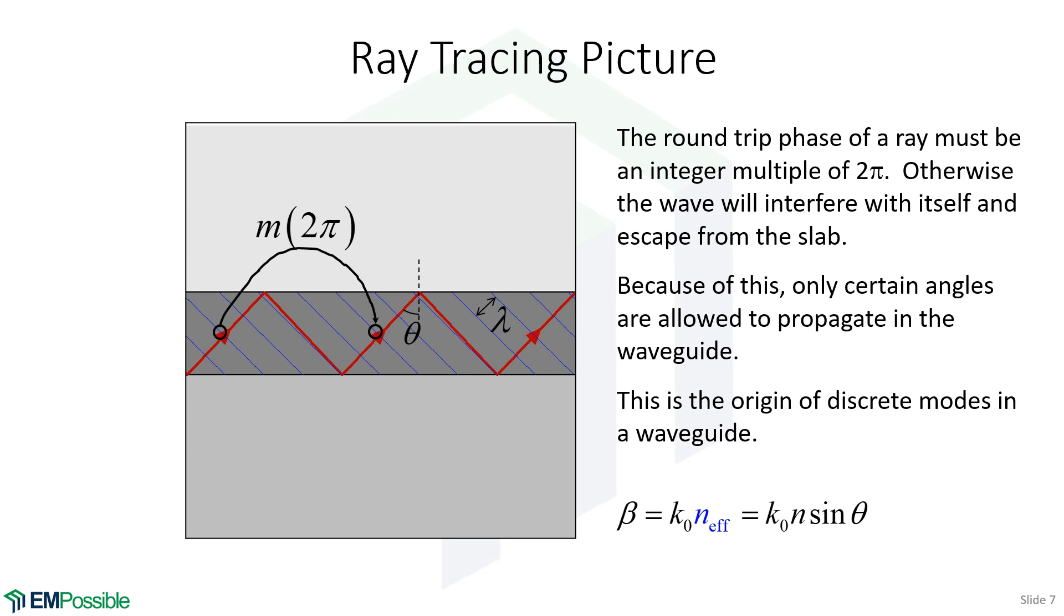Let's say we have one of those modes at angle theta—one of these special angles. It would bounce around and essentially march along this guide with some effective speed. We can characterize that with an effective refractive index, multiplied by the free space wave number k0, which is 2π over the wavelength. This helps us describe how quickly the wave oscillates.